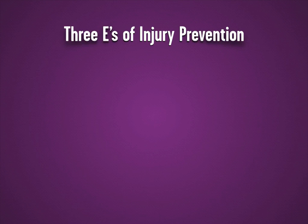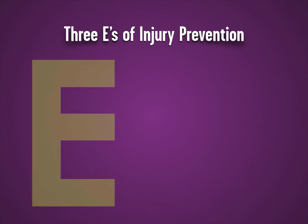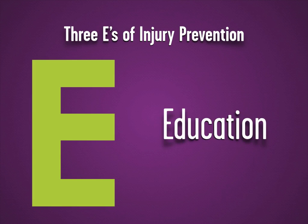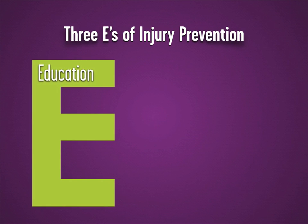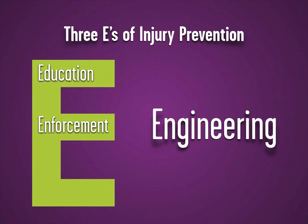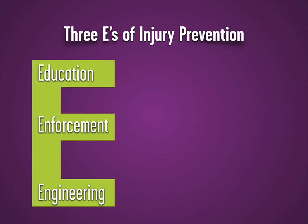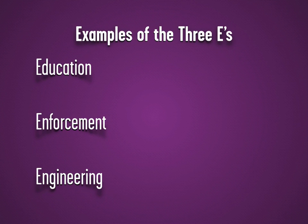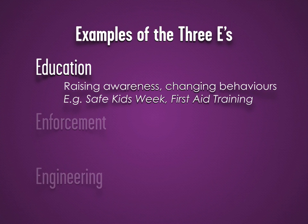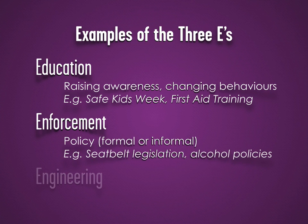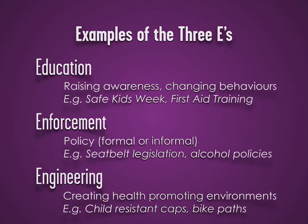The three E's of injury prevention focus on education, enforcement, and engineering. Examples of each: for education, Safe Kids Week and first aid training; for enforcement, seat belt laws and alcohol policies; and for engineering, child-resistant caps and bike paths.